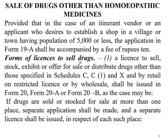Regarding the forms of licenses to sell drugs: a license to sell, stock, exhibit or offer for sale or distribute drugs other than those specified in Schedule C, C1 and X — whether by retail on restricted license or by wholesale — shall be issued in Form 20, Form 20A, or Form 20B as the case may be. If the drugs are to be sold or stocked for sale at more than one location, then separate applications are made for each location and separate licenses shall be issued for each such place.